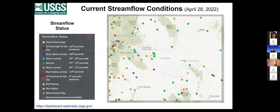Here's a look at current real-time streamflow conditions throughout the state. It's a hodgepodge — the green is normal, a range from the 25th to 75th percentile. In the eastern two-thirds of the state, we have pretty normal conditions for the stations reporting. In the western third, we have below normal at the 10th to 24th percentile at a fair amount of stations. There are some much below normals and some really low values over on the Snake and up into the park. So it's a mixed bag right now.